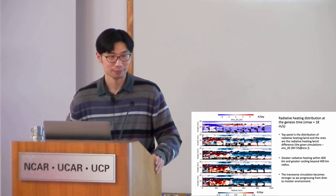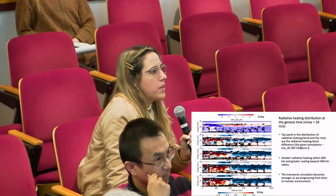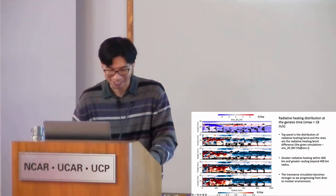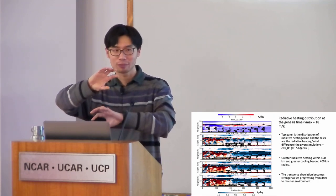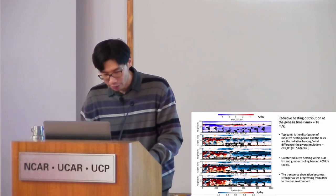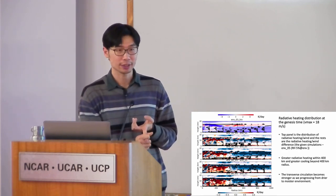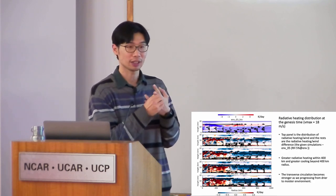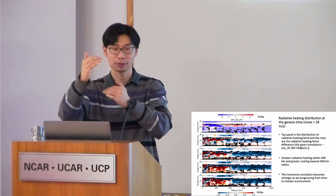A question is raised about whether the greater radiative heating in developing systems has been related to the type of convective system — specifically bottom-heavy versus top-heavy heating profiles. The speaker says this is a very good question and hasn't been explicitly addressed in terms of bottom-heavy versus top-heavy, though from the cloud perspective, frozen hydrometeors have much stronger radiative impact than liquid hydrometeors, and frozen hydrometeors tend to occur at mid to upper levels.